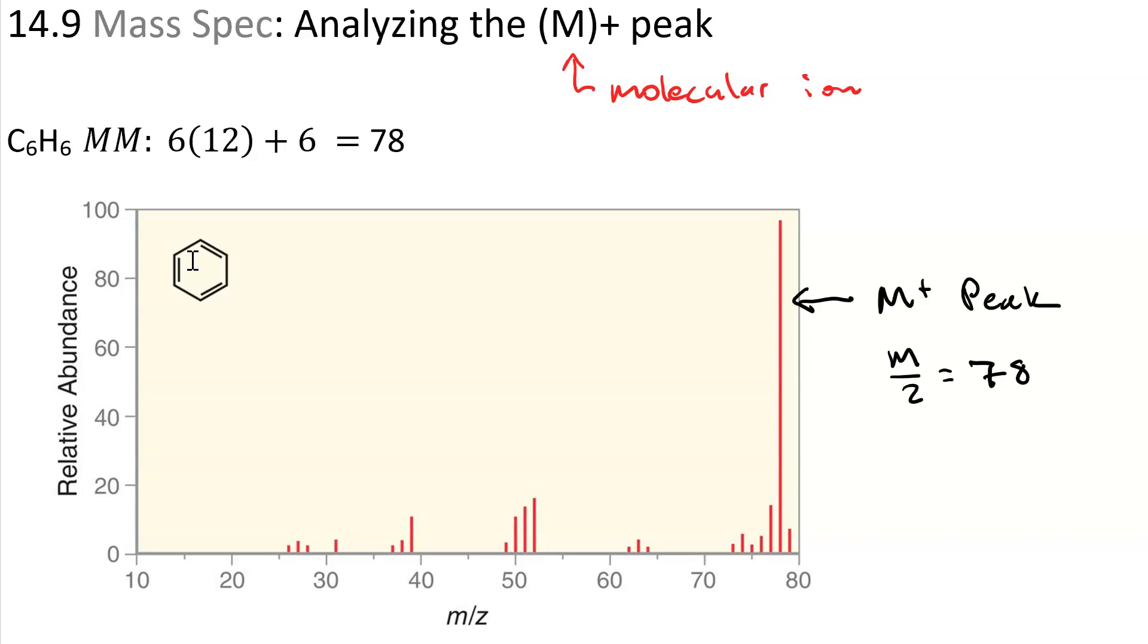It is possible to have the base peak not be the molecular ion peak, that is to see your highest peak in the mass spec at a lower M over Z ratio.